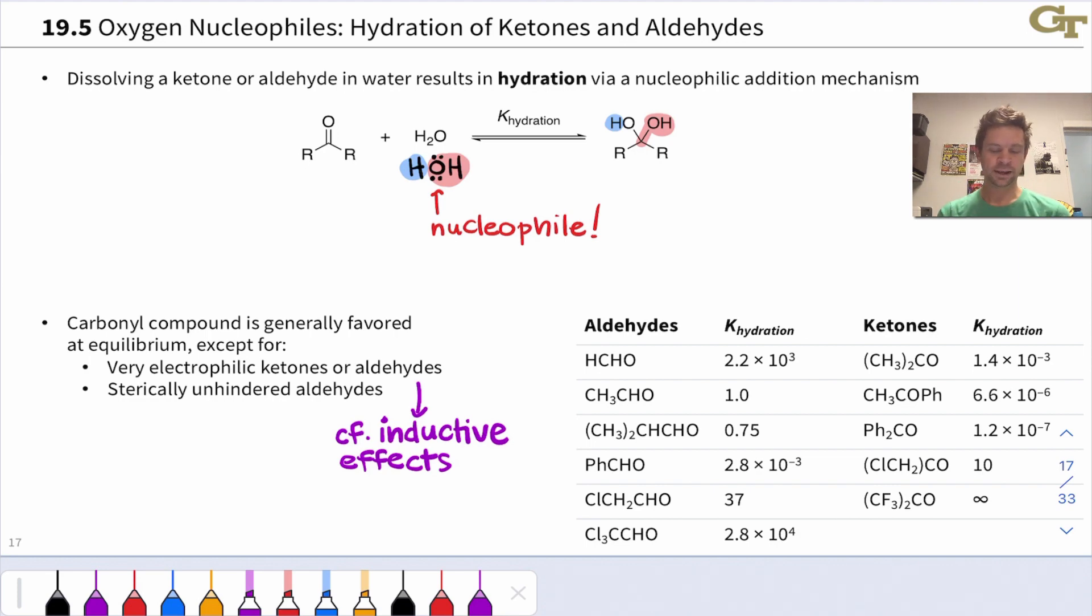A good example from this table is trichloroacetaldehyde known as chloral. This is hydrated to an even greater extent than formaldehyde at equilibrium, and it's because of the extreme electron withdrawing nature of this trichloromethyl group. So inductive effects due to electron withdrawing chlorines and fluorines can encourage hydration to occur.